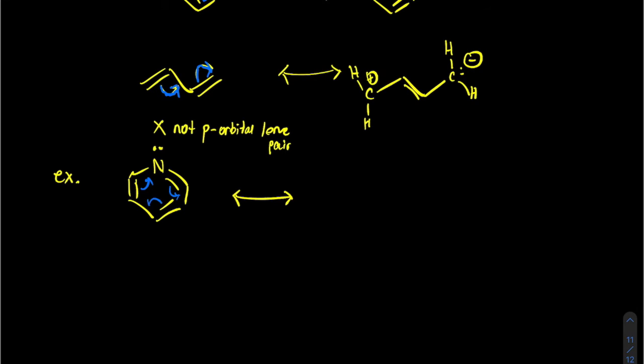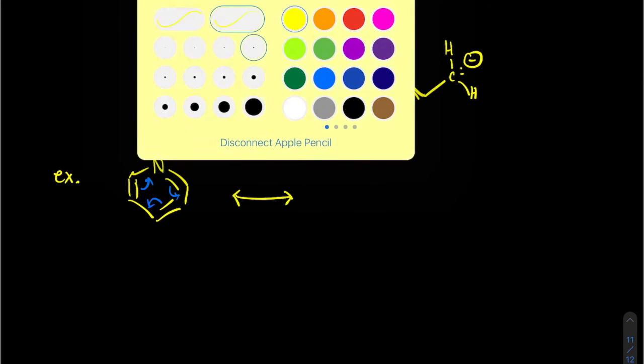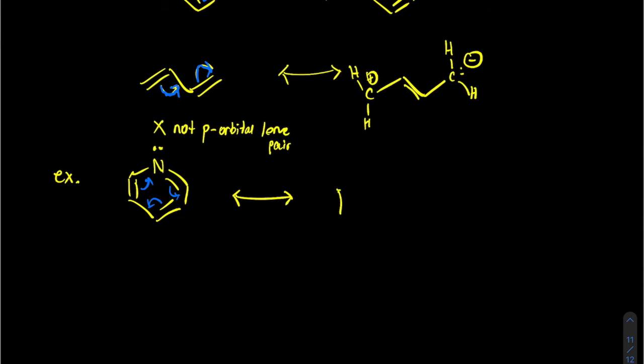Again, you can do this clockwise or counterclockwise, either way, and you'll get another resonance structure with alternating double bonds and the lone pair still stays there.